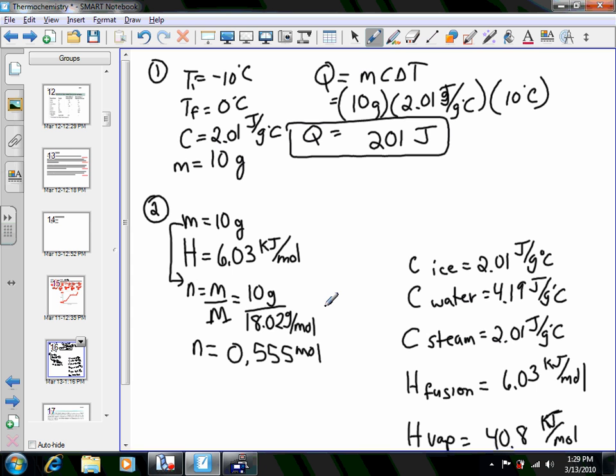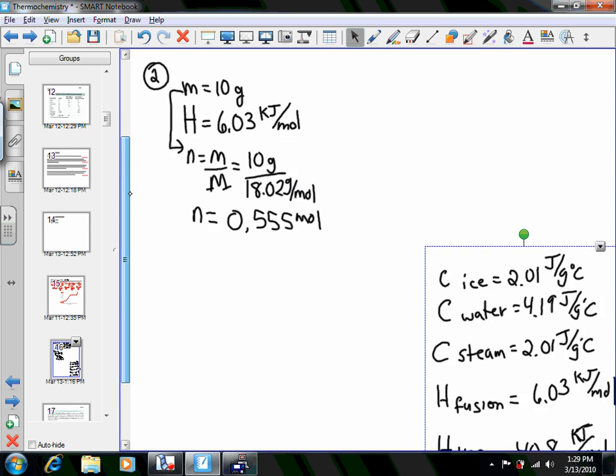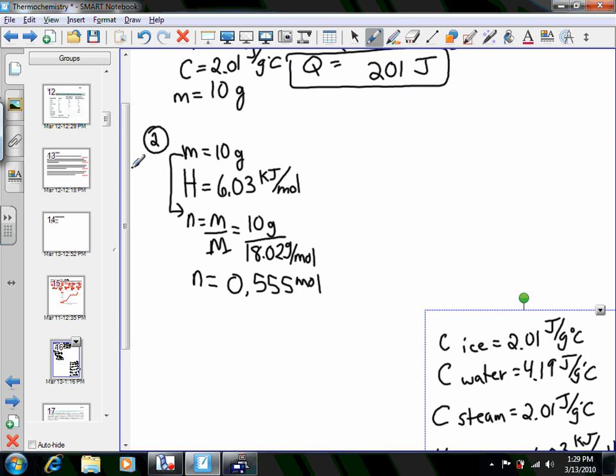And now we can work out our calculation here. I'll move some of these points I had down. And we'll do the formula that the enthalpy change for the phase change is N times H.